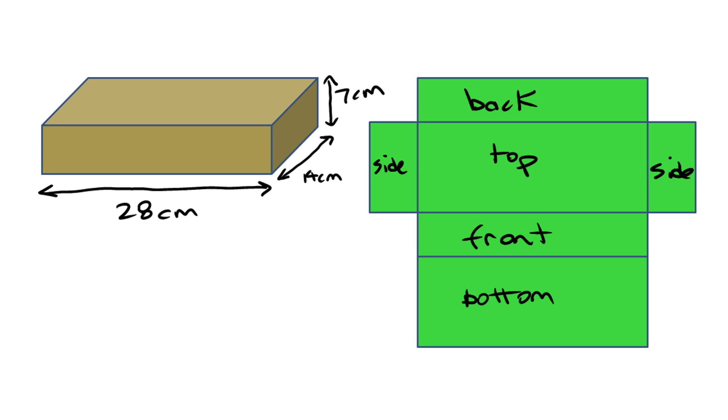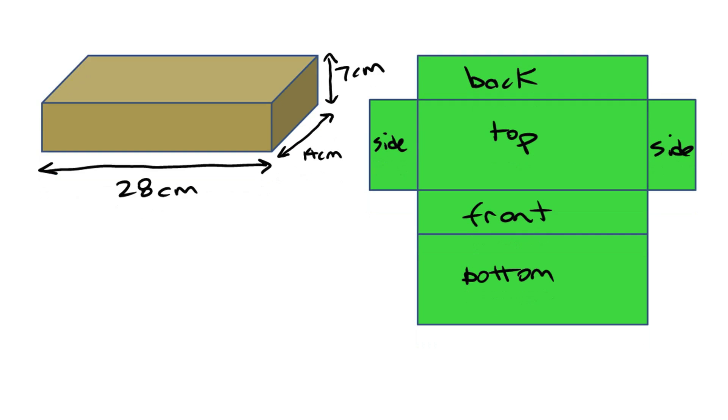All right, now when we figure this out, the top and the bottom are the same. So we just work out the top times it by two. The front and back are the same. So we can work that out, work out the front times it by two, and then work out one of the sides and times it by two. And that way we'll have all this area here. Right, that's what we're going to work out. So let's go down below here and work this out.